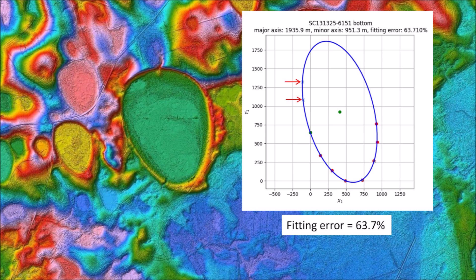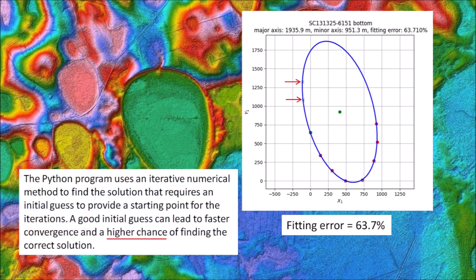However, the fitting error is 63.7% because the program did not identify the intersection points correctly. The Python program uses an iterative numerical method to find the solution that requires an initial guess to provide the starting point for the iterations. A good initial guess can lead to faster convergence and a higher chance of finding the correct solution. The convergence clearly failed in this case.